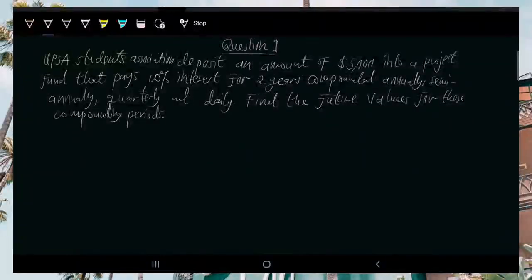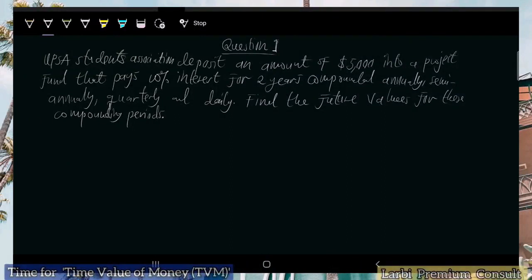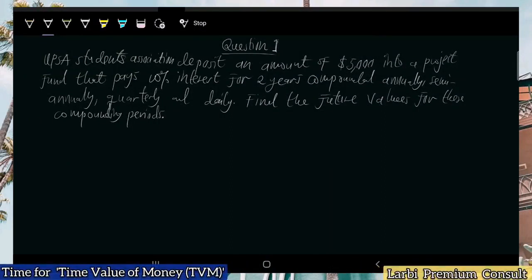Hello students, welcome to this session. In this video we are looking at a question on time value of money. The students association deposits an amount of five thousand dollars into a budget fund that pays ten percent interest for two years, compounded annually, semi-annually, quarterly, and daily. Find the future values for these compounding periods.